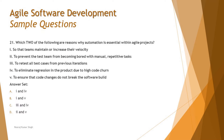Moving on to question 21: which two of the following are reasons why automation is essential within agile projects? An important clarification: 'which two' does not mean you select two answer options. There are five statements given, and the options tell you which two are correct — for example, one and four, one and five, three and four. In the actual exam, radio buttons indicate single selection and checkboxes indicate multiple selection.